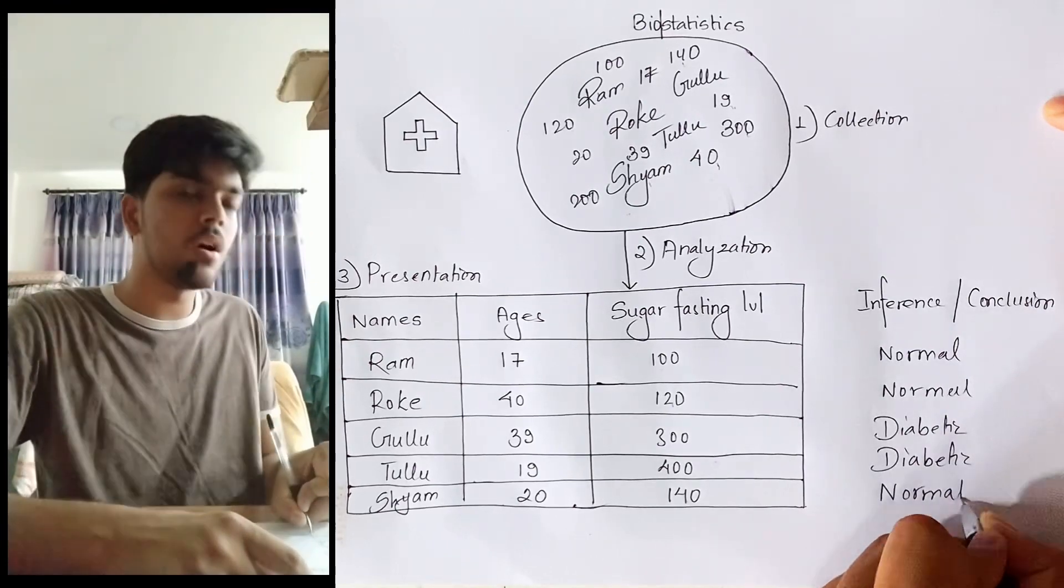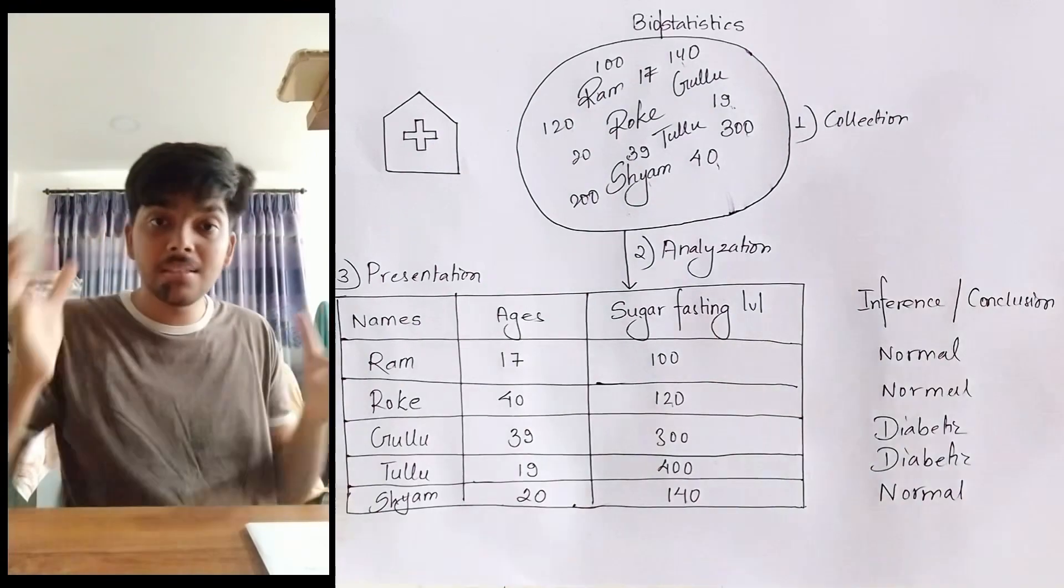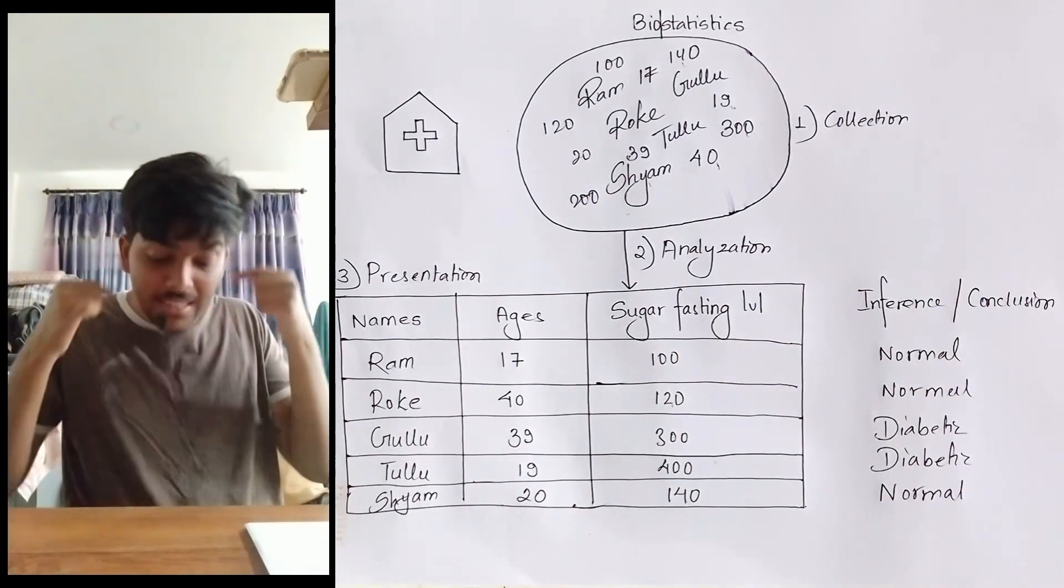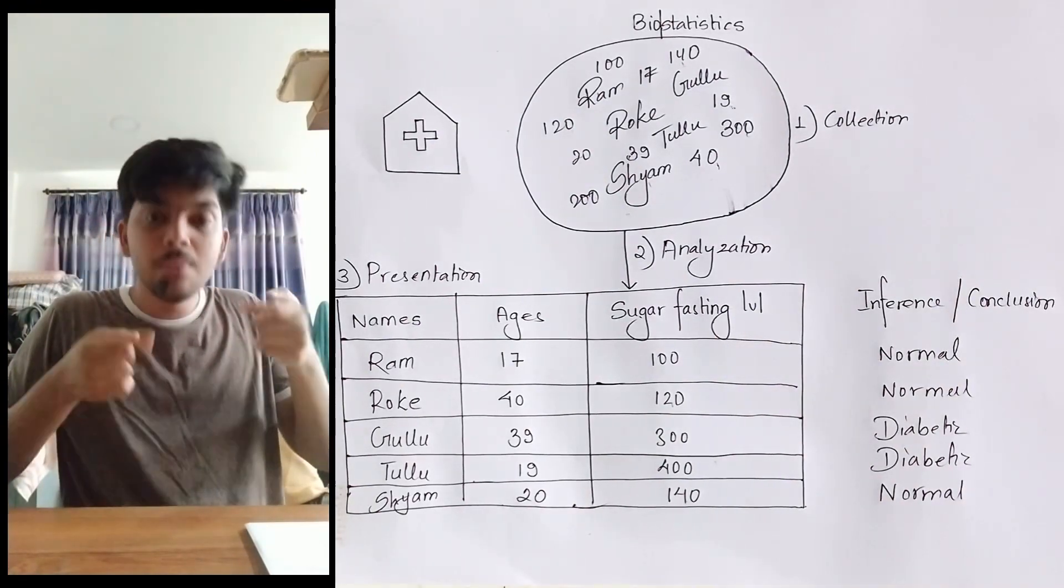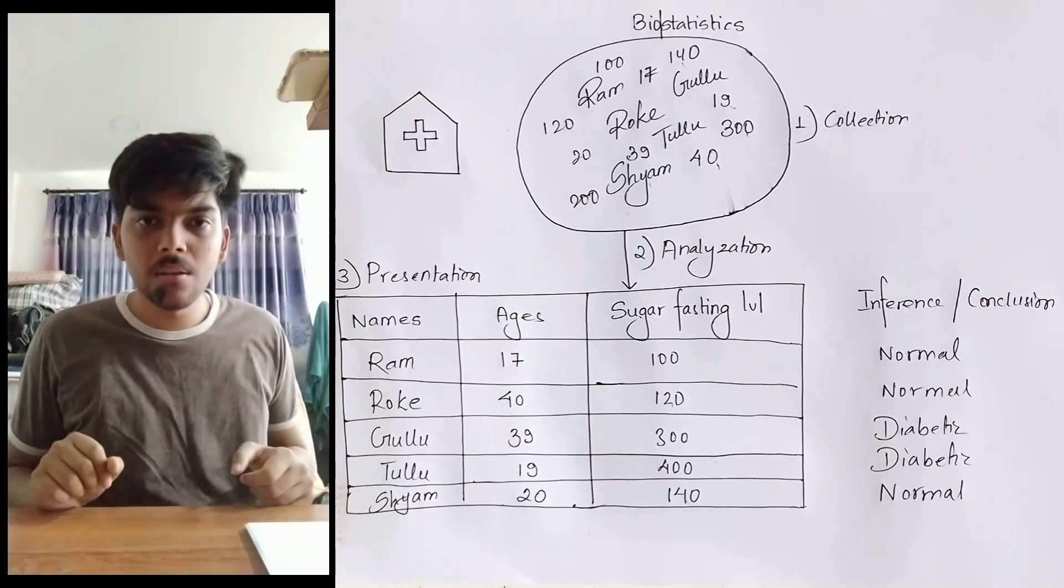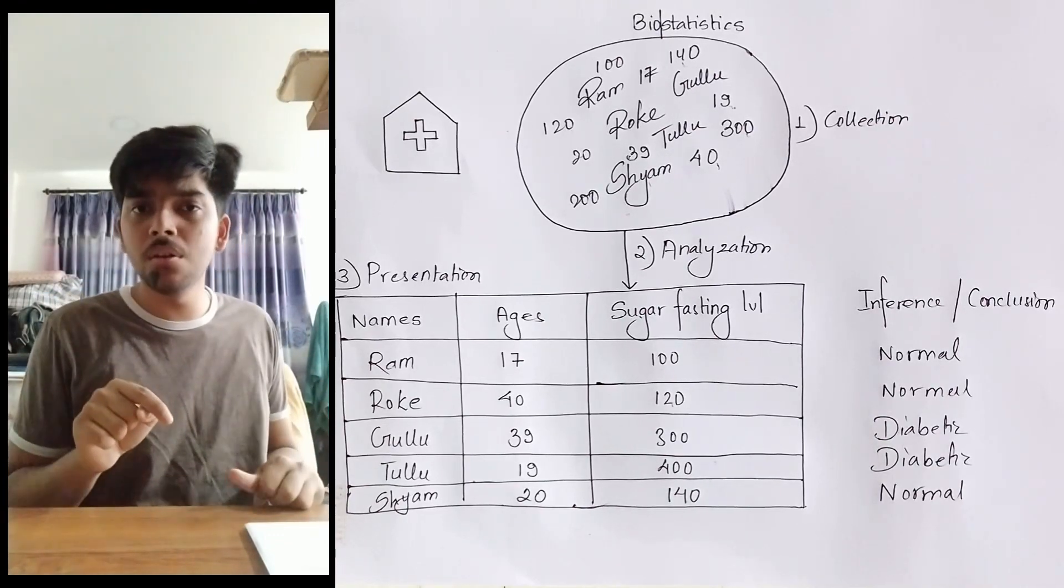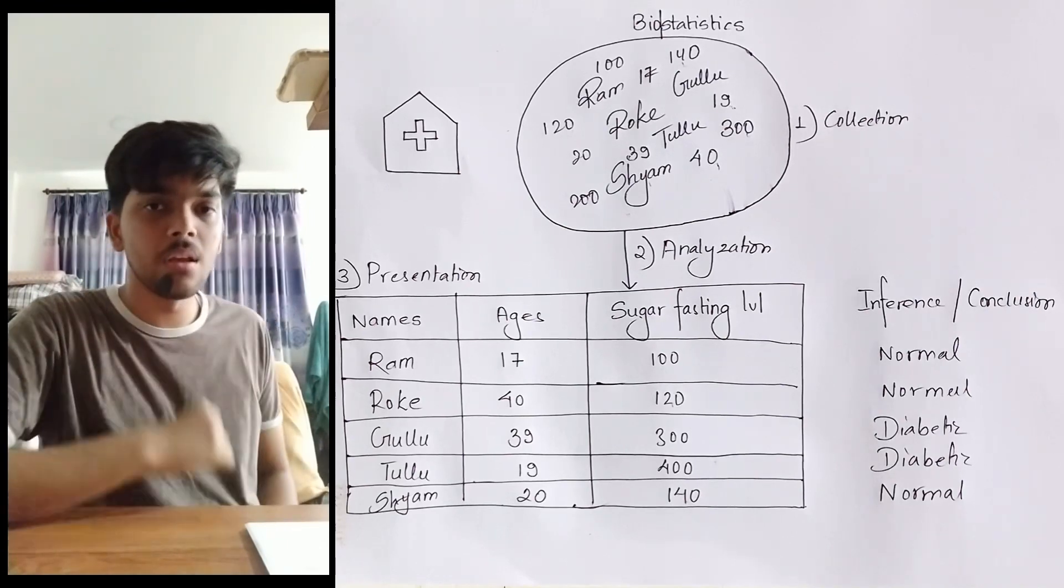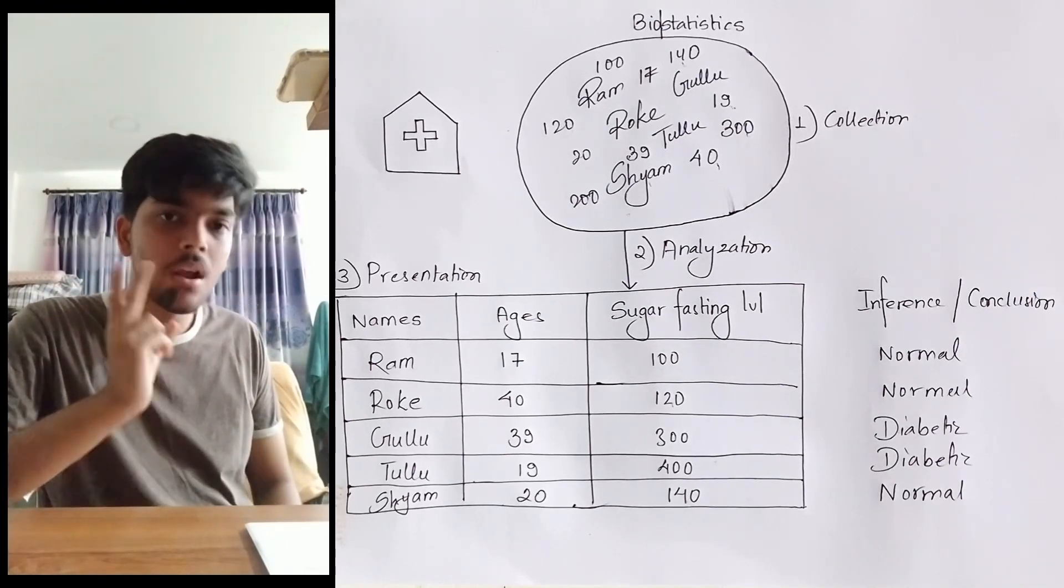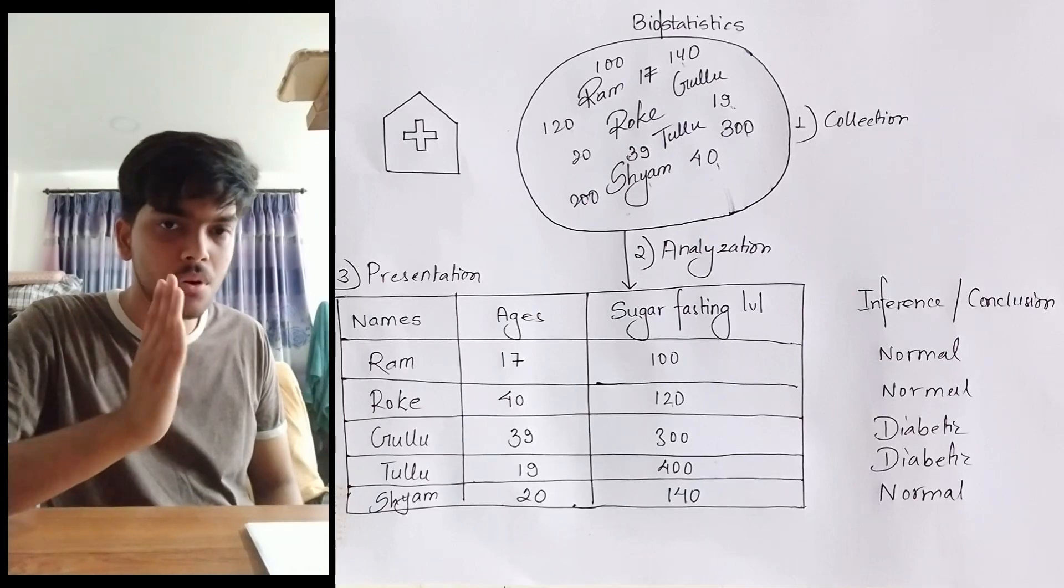All these steps come under statistics: collection of data, analyzing the collection of data, presenting that data, and finally using the information from that presentation to conclude or infer something. Collection, analysis, presentation, and inference or conclusion.